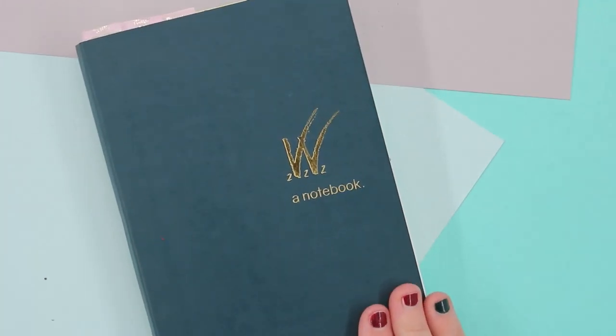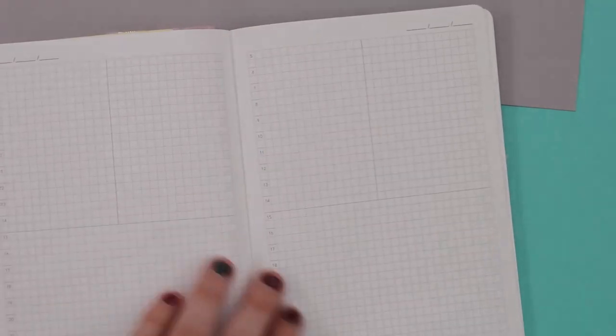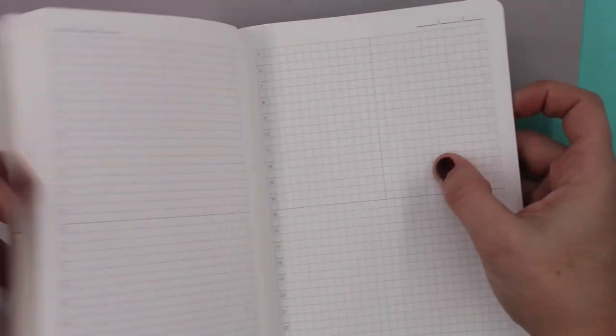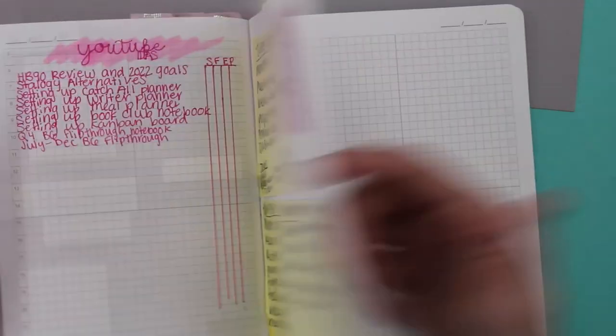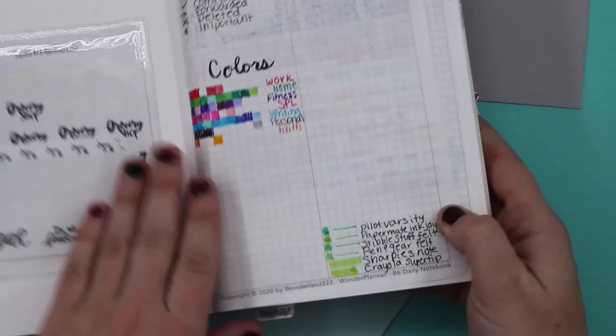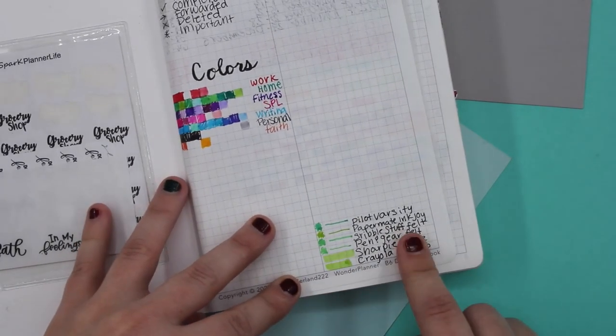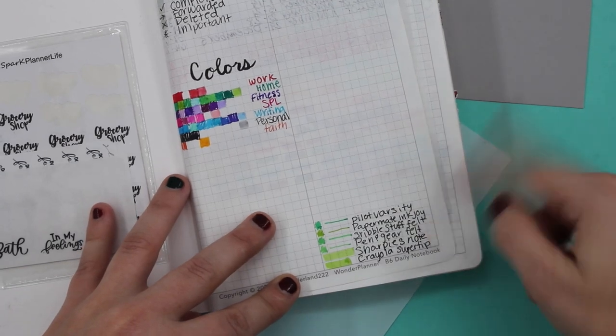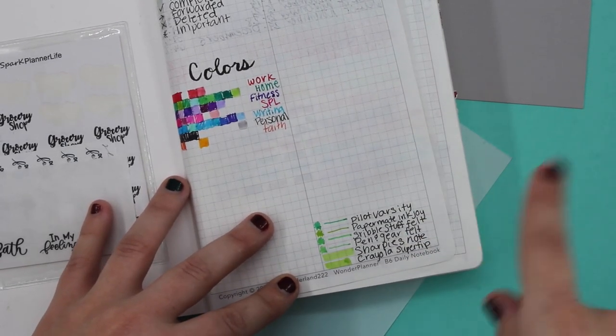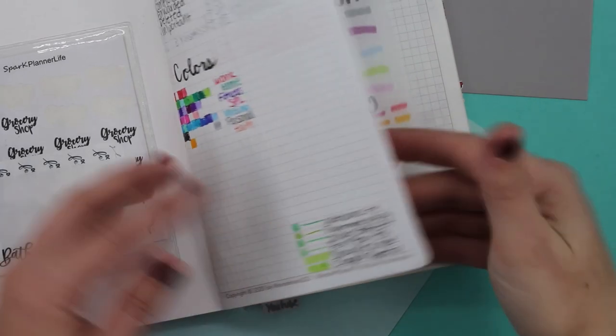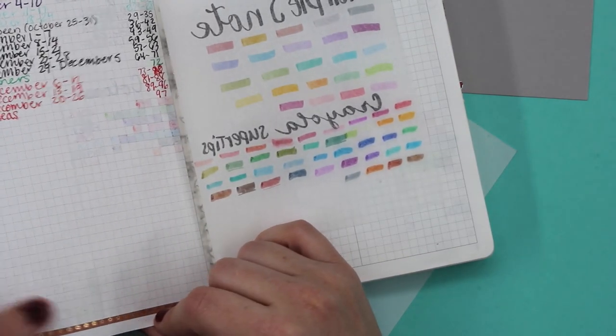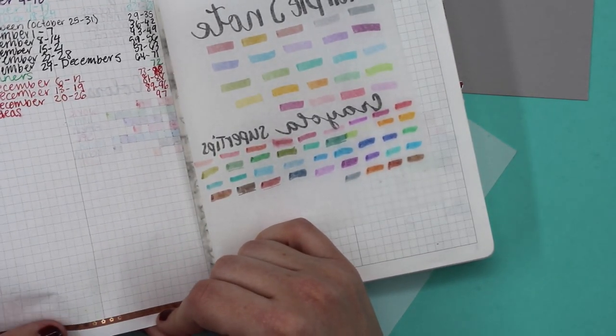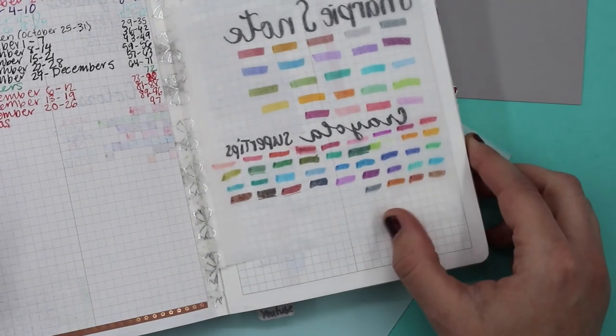So this Wonderland is the notebook version. So it is essentially the daily planner, and I have been using it since October, and I have really been loving it. So what I've already done is I have done a pen test here. So I have looked at the Pilot Varsity, the Papermint Inkjoy, the scribble stuff, another felt tip, Sharpie, S-Note, and Crayola super tip. So with that, there is essentially minimal bleed-through on that, which is awesome.